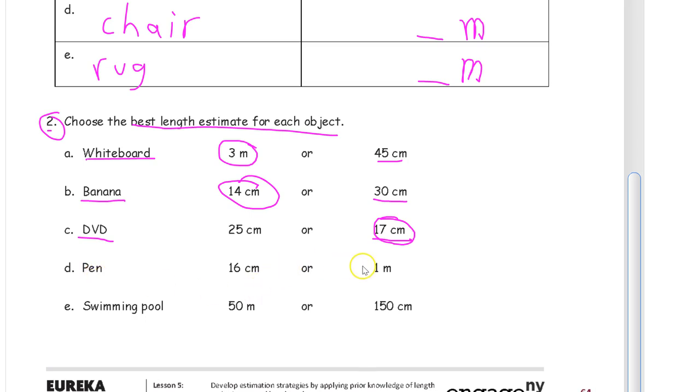Okay, so a pen. A whole meter, a pen that would be a meter long, would be a really big pen. I'm sure somebody makes one that big, but most of them are going to be that long. And a swimming pool that's only 150 centimeters. That's going to be like 150 centimeters, that's going to be, not even 10. It's going to be like five rulers long. So that's a really tiny swimming pool. 50 meters looks like it makes more sense to me.